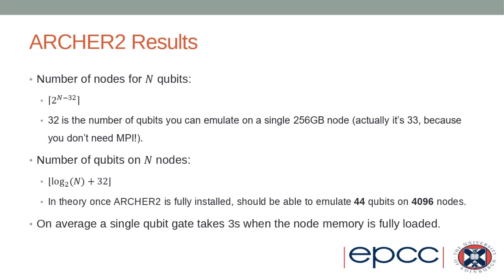You can easily calculate the number of nodes needed for N qubits as ⌈2^(N−32)⌉, since 32 is the number of qubits you can emulate on a single 256 GB node — though on a single node without MPI you can actually reach 33. The reverse calculation gives ⌊log₂(nodes) + 32⌋ qubits per N nodes. Once Archer2 is fully installed we should be able to emulate up to 44 qubits on 4096 nodes. For TA planning: on average a single-qubit gate with fully loaded memory takes about three seconds on Archer2.